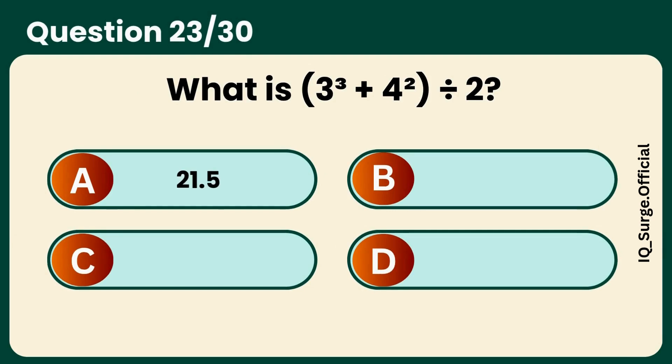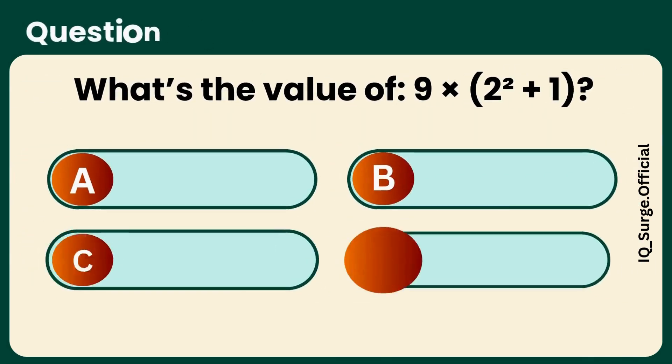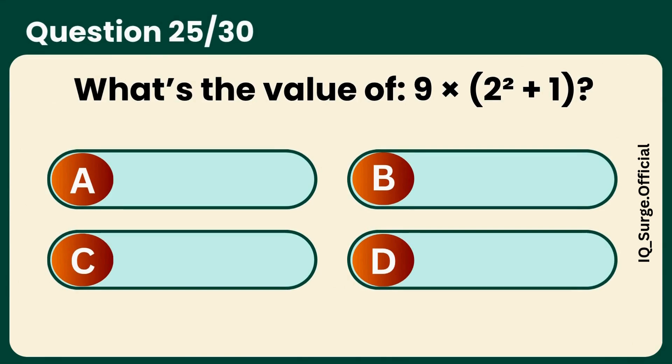What is 3 cubed plus 4 squared divided by 2? Answer A, 21.5.